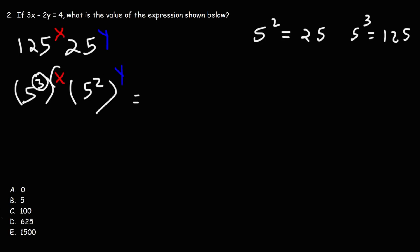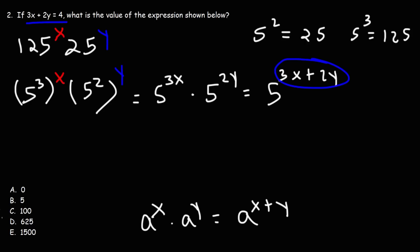So now we can multiply those two exponents. So we get 3 times x, and then we can multiply these two. So that's going to give us 2 times y. Now when you multiply two variables with the same base, but with different exponents, you can add the exponents. So what we can do is add 3x and 2y. This becomes 5 raised to the 3x plus 2y. And we're given the value of 3x plus 2y. It's equal to 4. So we're going to replace this with 4.